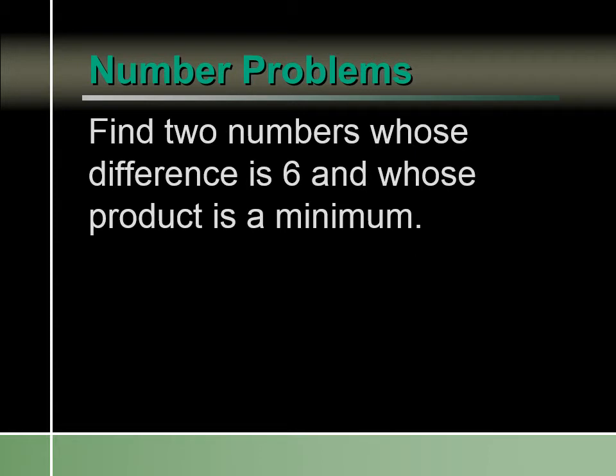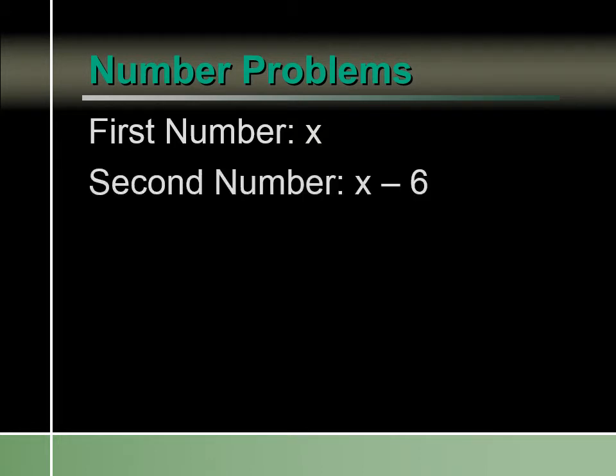Let's start with number problems. Let's say we want to find two numbers whose difference is 6, but whose product is a minimum. So we want to multiply two numbers together, and those two numbers have a difference of 6. We're going to let our first number be x, and since the two numbers have a difference of 6, our second number is going to be x minus 6.